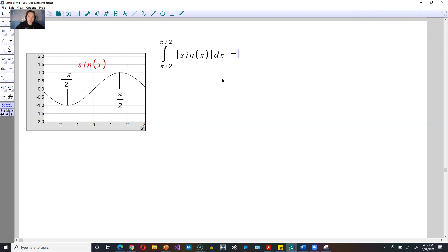Because we have the absolute value present, we have to break this into two separate pieces. The first one will go from negative π/2 up to 0.